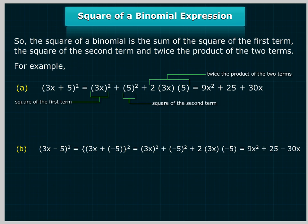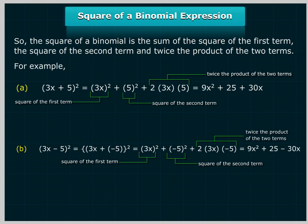(3x - 5)² = (3x + (-5))² = (3x)², square of the first term, plus (-5)², square of the second term, plus 2 × 3x × (-5), twice the product of the two terms, which equals 9x² + 25 - 30x.